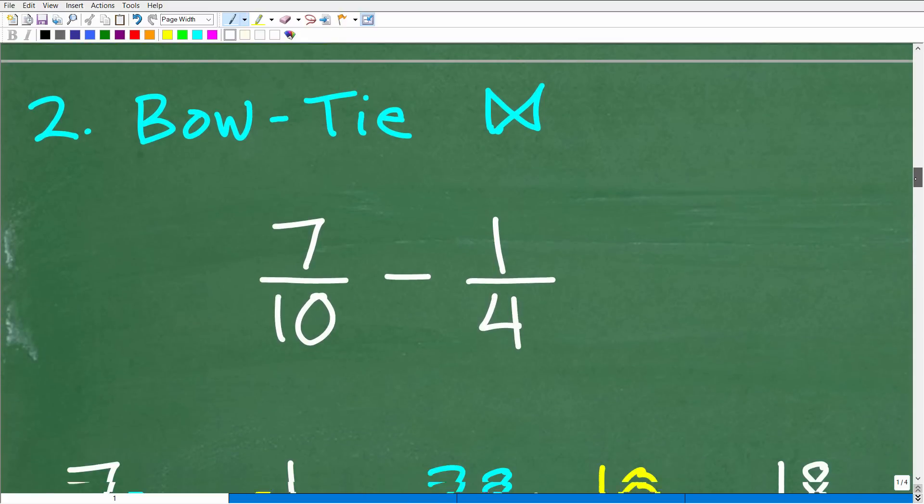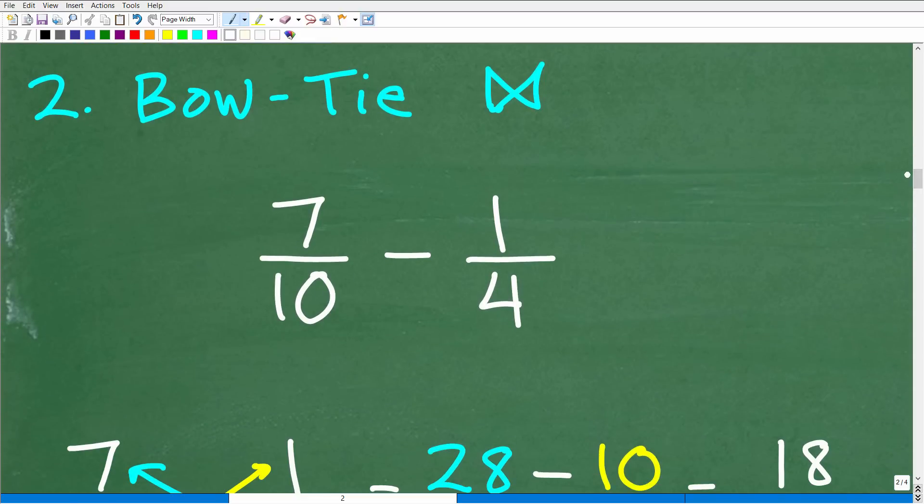But let me show you one of my favorite things in math. It's one of the coolest shortcuts there is. I call it the bow tie method because it reminds me of a bow tie.